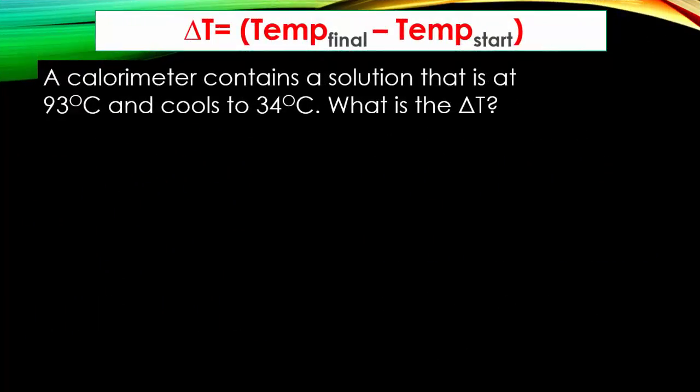Delta T is calculated very simply. It's the final temperature being subtracted from the starting temperature. A calorimeter contains a solution that is at 93 degrees Celsius and cools to 34. So we know right there that our starting temperature is 93 while our final temperature is 34. Mathematically, we have to say what is 34 minus 93?